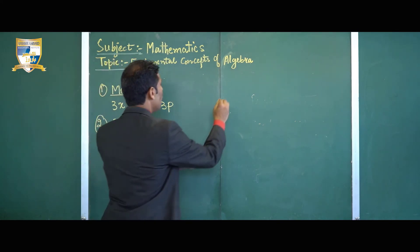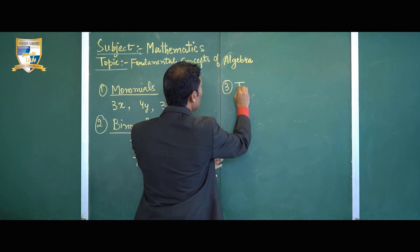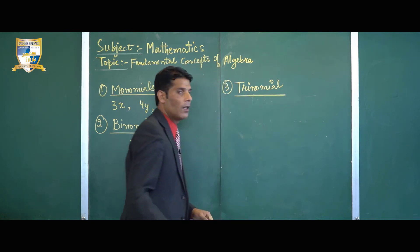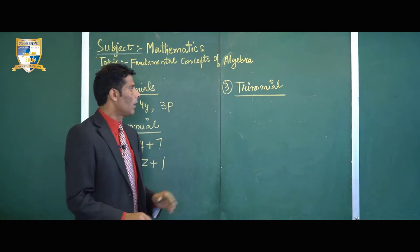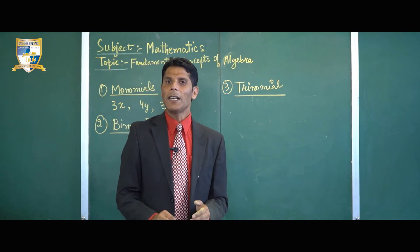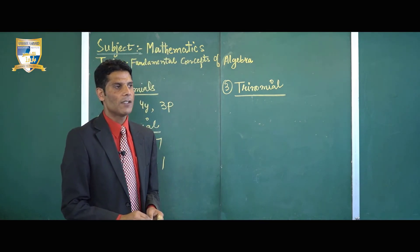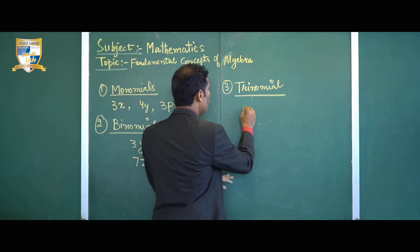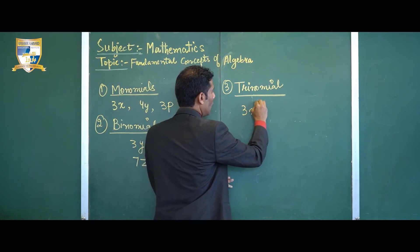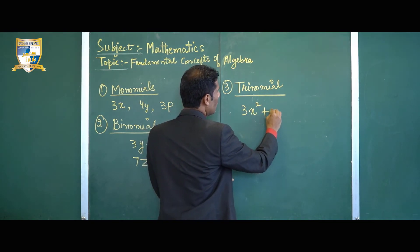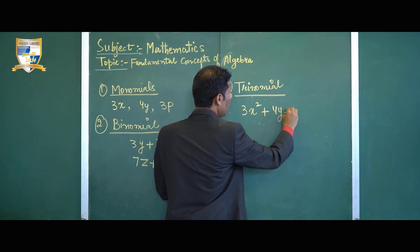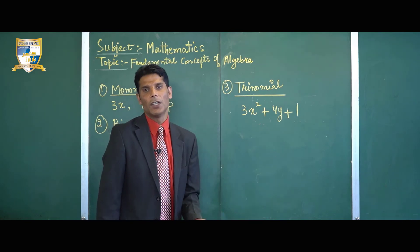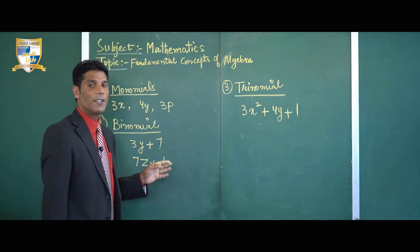The third type of algebraic expression is trinomial. 'Tri' means three, so a trinomial is an algebraic expression which contains three terms. For example, 3x squared plus 4y plus 1 is a trinomial because it contains three terms. This covers the different kinds of algebraic expressions.